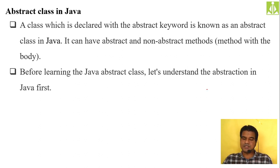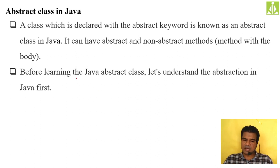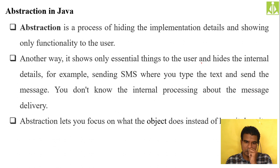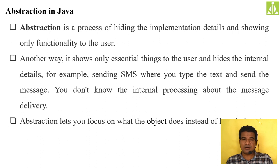The next topic is abstract classes and abstract methods in Java. A class which is declared with the abstract keyword is known as an abstract class. It can have abstract as well as non-abstract methods. Before learning about abstract classes, we need to understand the term abstraction.